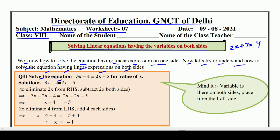Solve the equation: 3x minus 4 is equal to 2x minus 5, for the value of x. इसमें LHS पर भी x वाला linear expression है और right hand side पर भी variable वाला linear expression है. Mind it: variable is there on both sides — place it on left side.